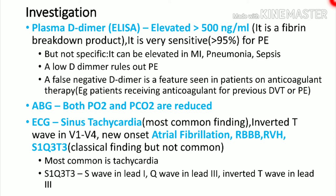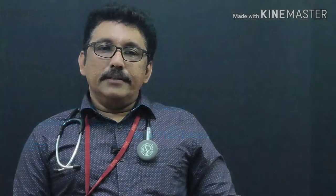D-dimer is routinely tested in suspected pulmonary embolism and DVT. It is elevated (typically more than 500 nanograms per mL) in PE and DVT, but an elevated D-dimer does not confirm the diagnosis. However, if D-dimer is negative, it can rule out PE or DVT. The plasma D-dimer ELISA test has a high negative predictive value — it is used to rule out, not to diagnose, pulmonary embolism.